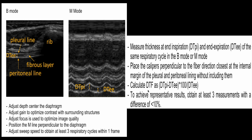Calculate the diaphragm thickening fraction (DTF) as: (inspiratory diameter − expiratory diameter) × 100 ÷ expiratory diameter. To achieve representative results, obtain at least three measurements with a difference of less than 10% between them. Note that here we are measuring the contraction of the muscle rather than its excursion.